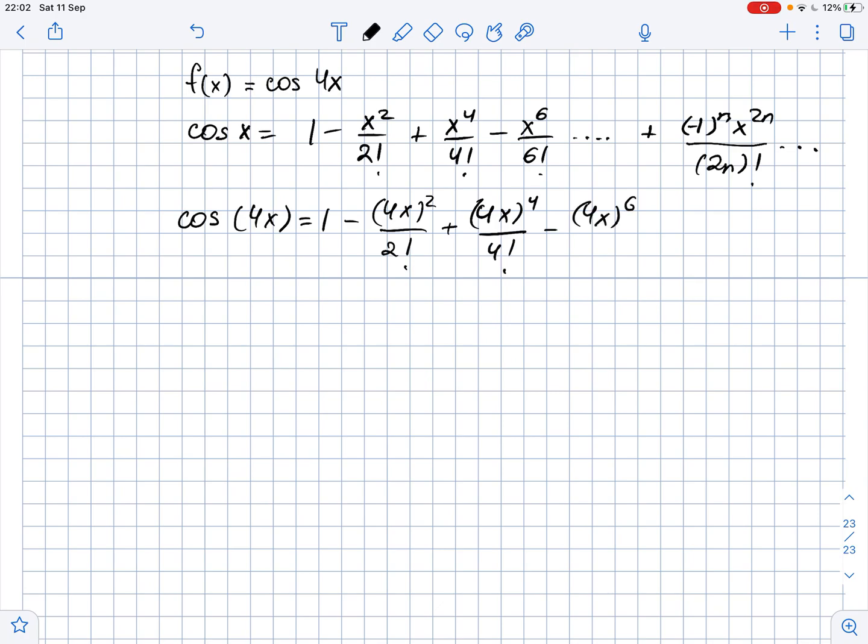over 4 factorial minus 4x to the sixth power over 6 factorial and so on, plus negative 1 to the power of n times 4x to the power of 2n over 2n factorial. Let's simplify this.